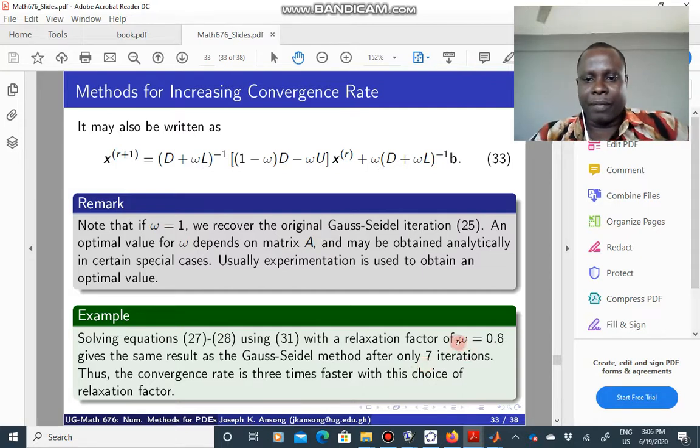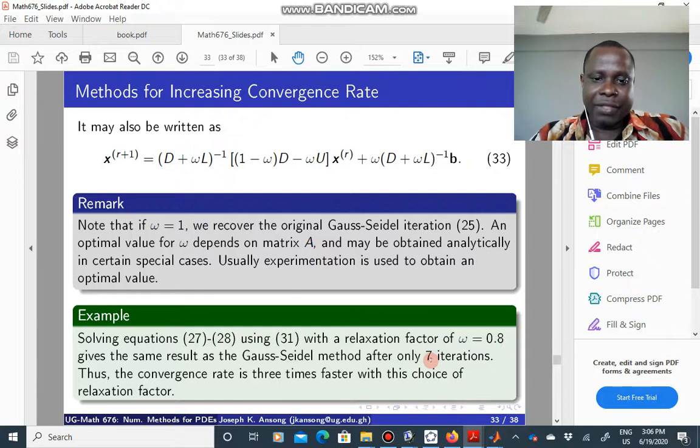So an optimal choice for this omega term actually increases the convergence rate by a very large amount. So in this case, three times faster than what we got for the Gauss-Seidel method.